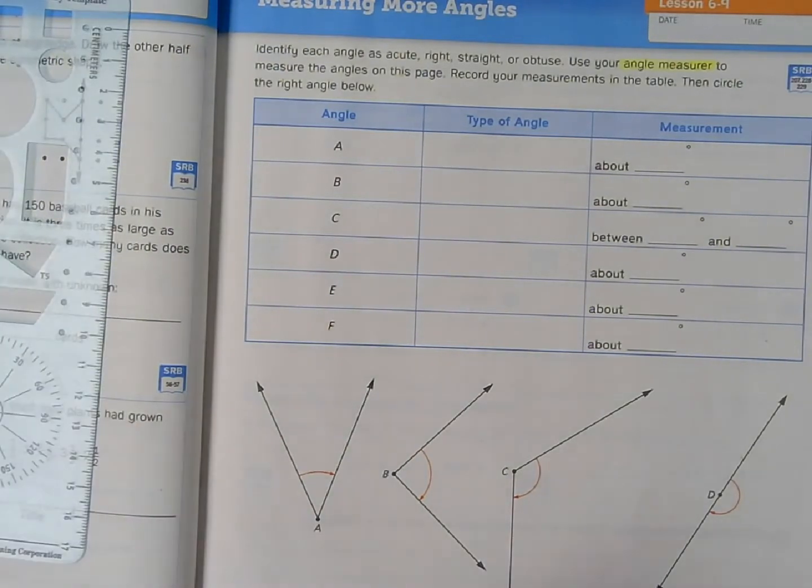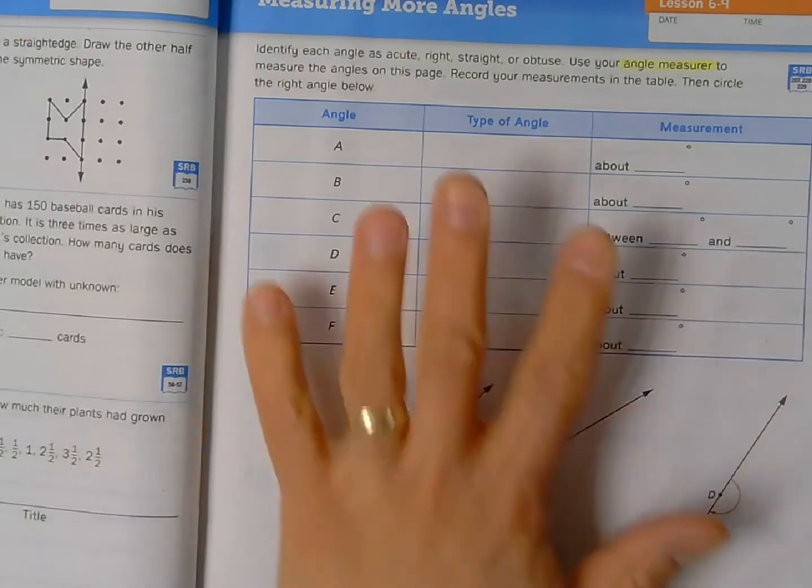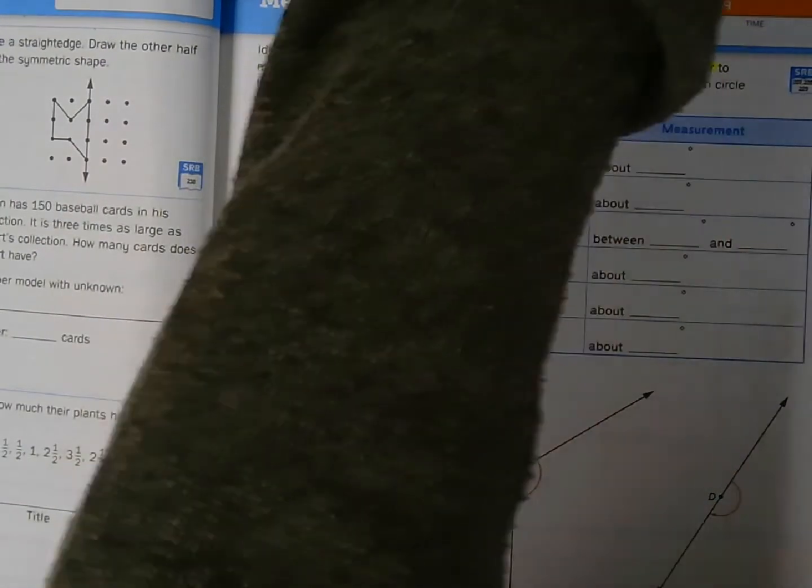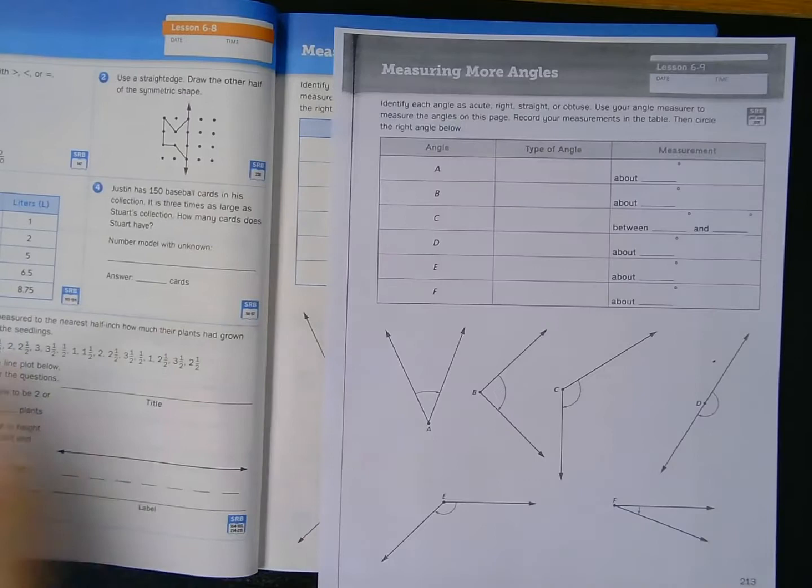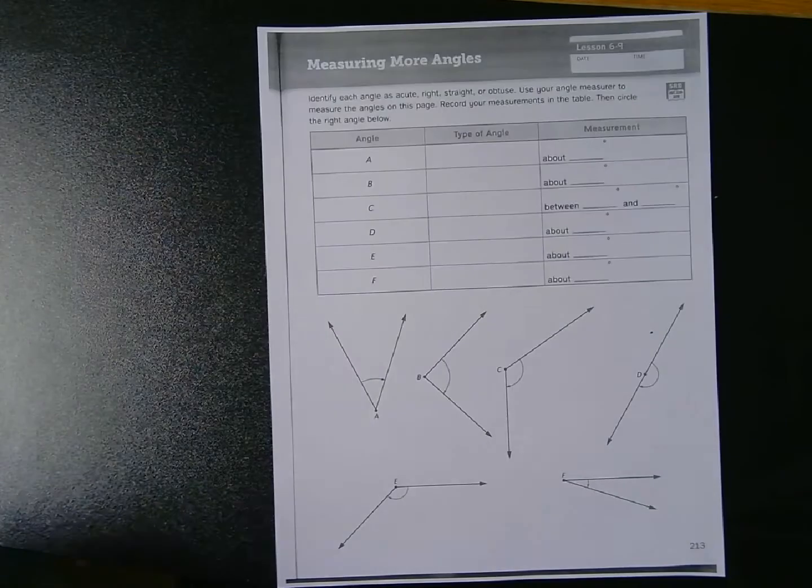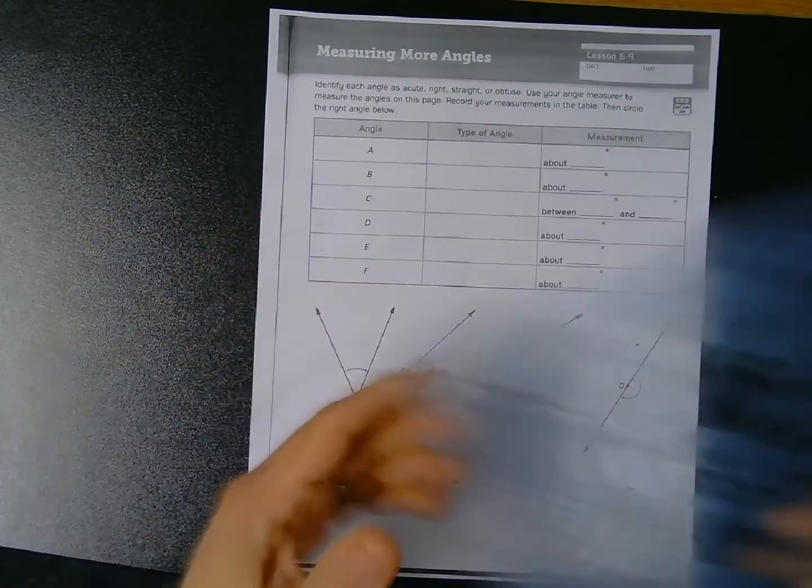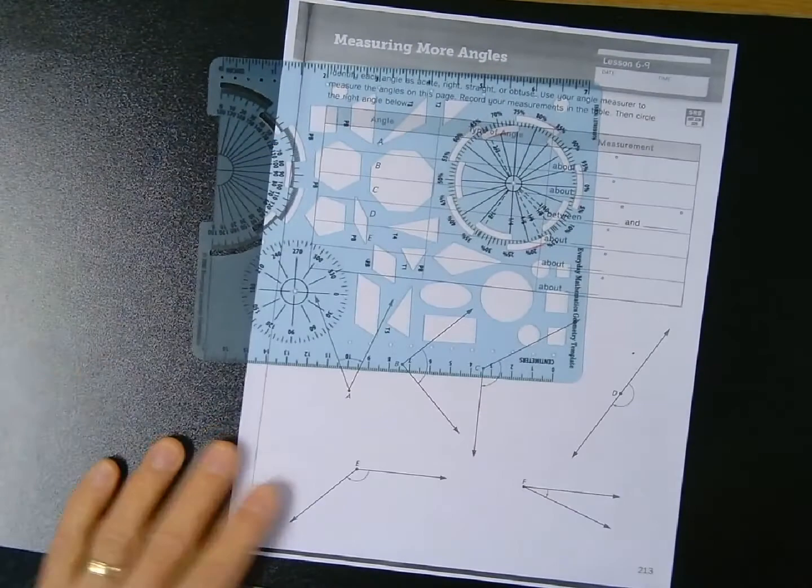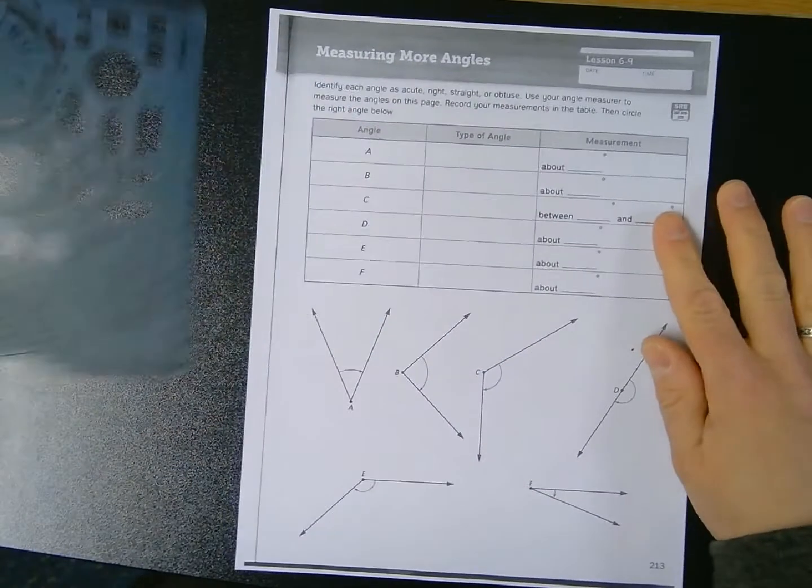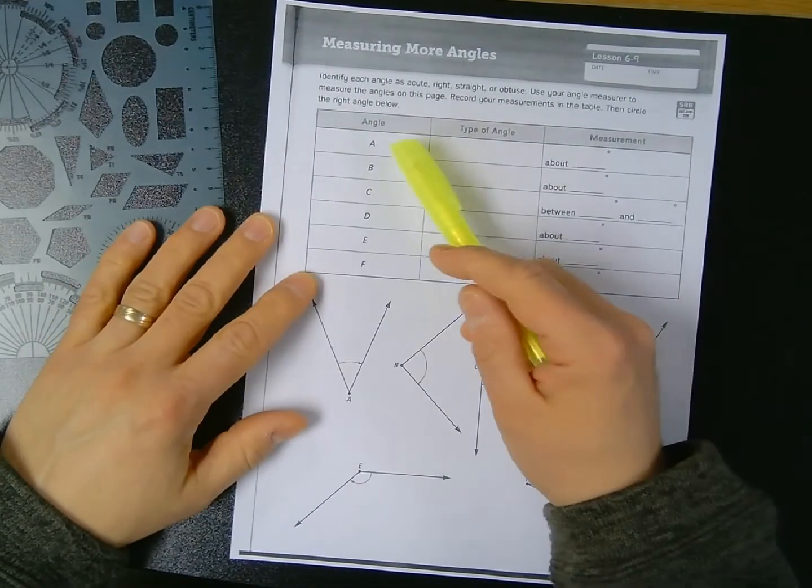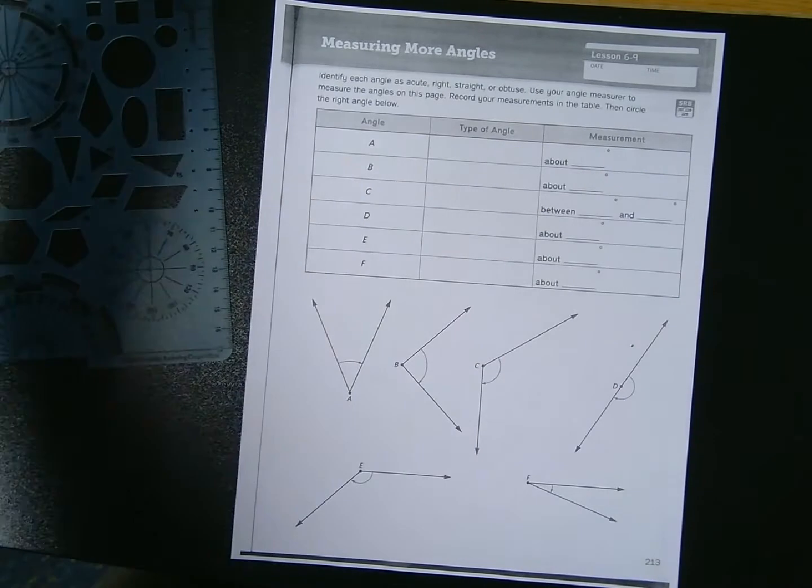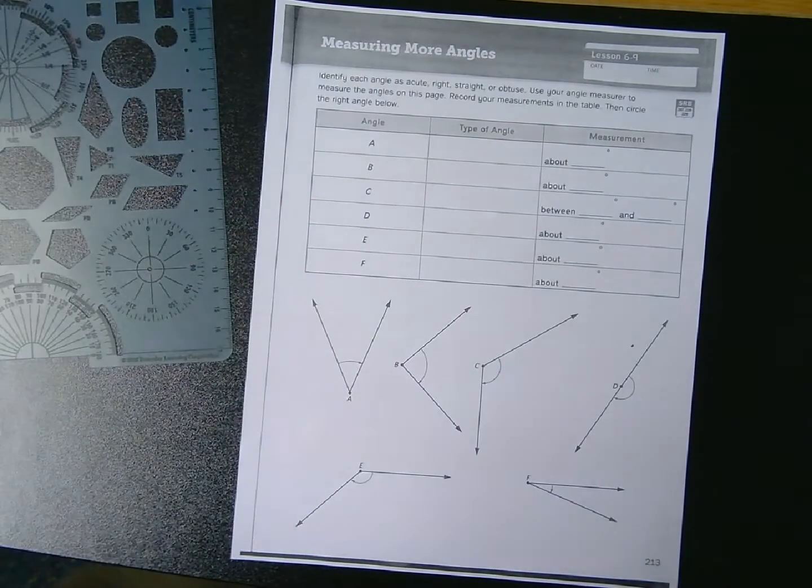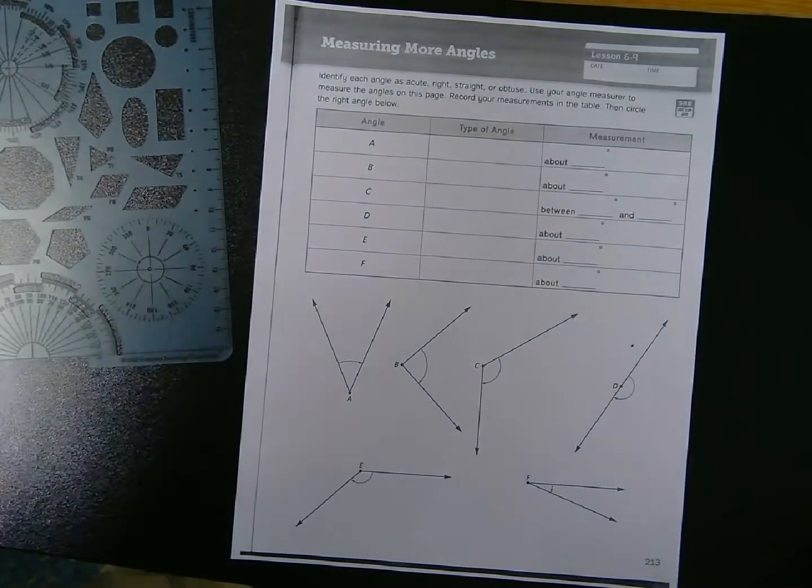And before I get started, I am going to switch from my math journal page, which is still in my math journal book, to a photocopied version, which will allow me to lay it flat and do some measurements flat on my surface here of my standing desk. Let's take a look at the first problem. It says angle A. I need to identify what type of angle it is, and I need to give a measurement.